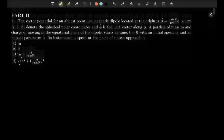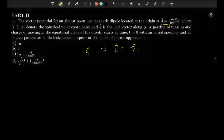The first question gives the vector potential of an almost point-like magnetic dipole located at the origin. We are given this vector potential, and we know that the magnetic field is given by the curl of the vector potential, where R, θ, φ denote spherical polar coordinates and φ̂ is the unit vector along the φ direction. A particle of mass m and charge q moves in the equatorial plane, starting at t=0 with initial speed v₀ and impact parameter b. The instantaneous speed at the point of closest approach is v₀.